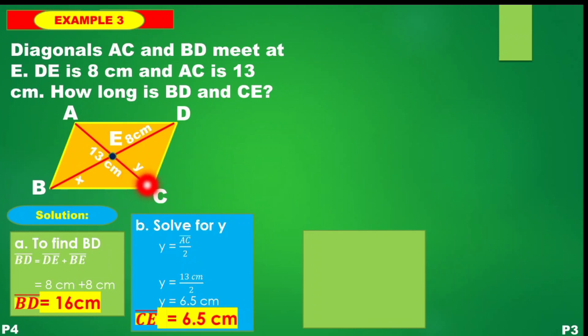Dividing by 2: 13 ÷ 2 gives us 6.5 cm. That is segment CE, or the value of Y.